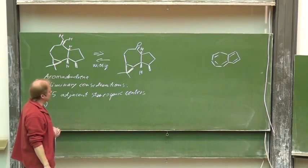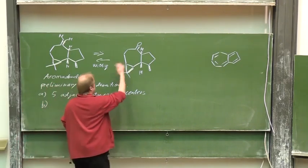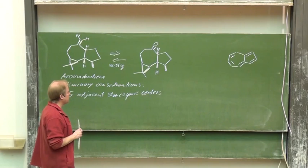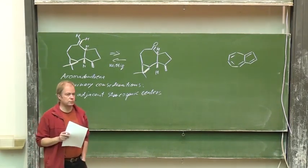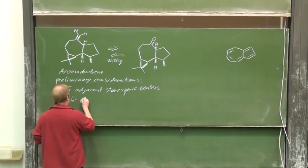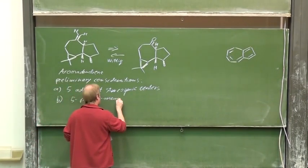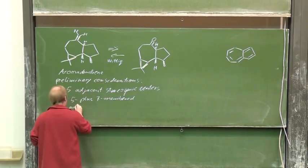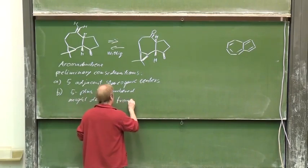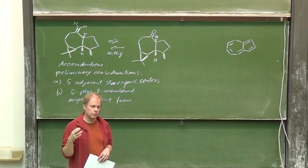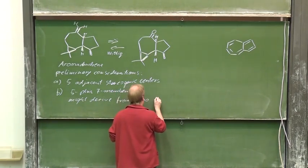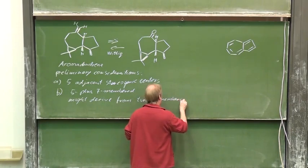Setting up that not as a saturated system, you need therefore a good idea. And this idea could for instance be if we have a seven and a five membered ring, so five plus seven membered might derive from the combination of two six membered rings.